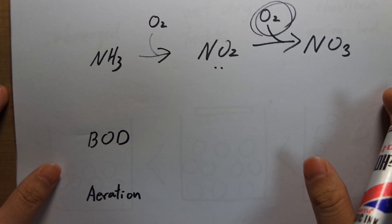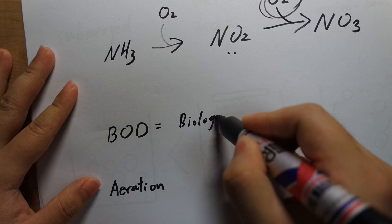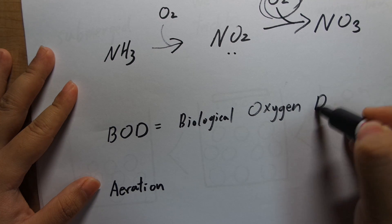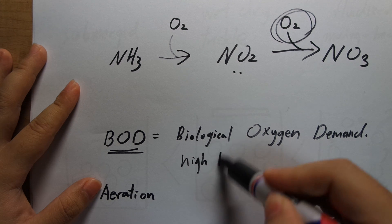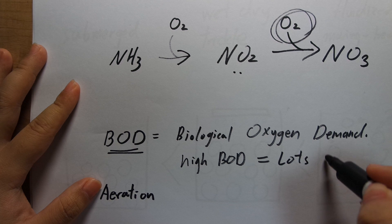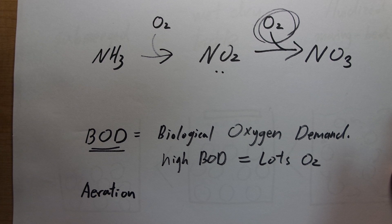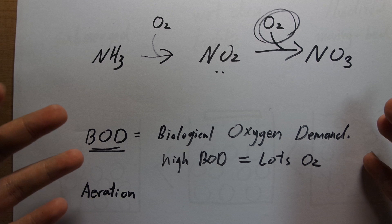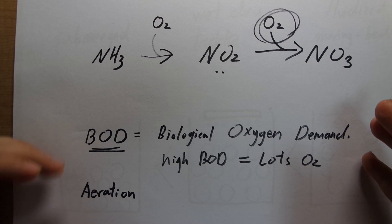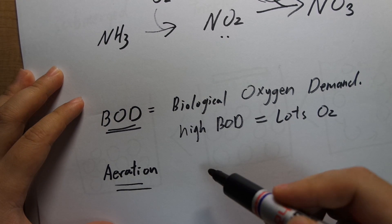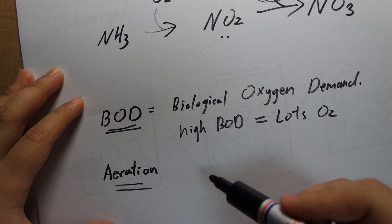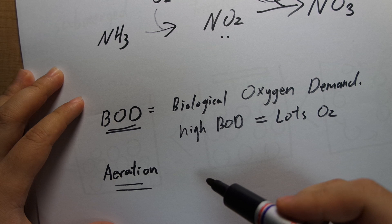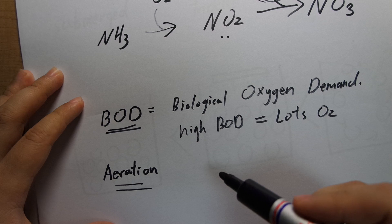In wastewater treatment there is a concept called BOD — Biological Oxygen Demand. BOD is a measure of how dirty the water is: high BOD means you need lots of oxygen to clean the water. That is how critical oxygen is. In fact, aeration — adding air to the water to give it more oxygen — is so important that at wastewater treatment plants, the highest amount of energy used is just to run huge blowers to blow air into the water. It's the exact same for your aquarium.